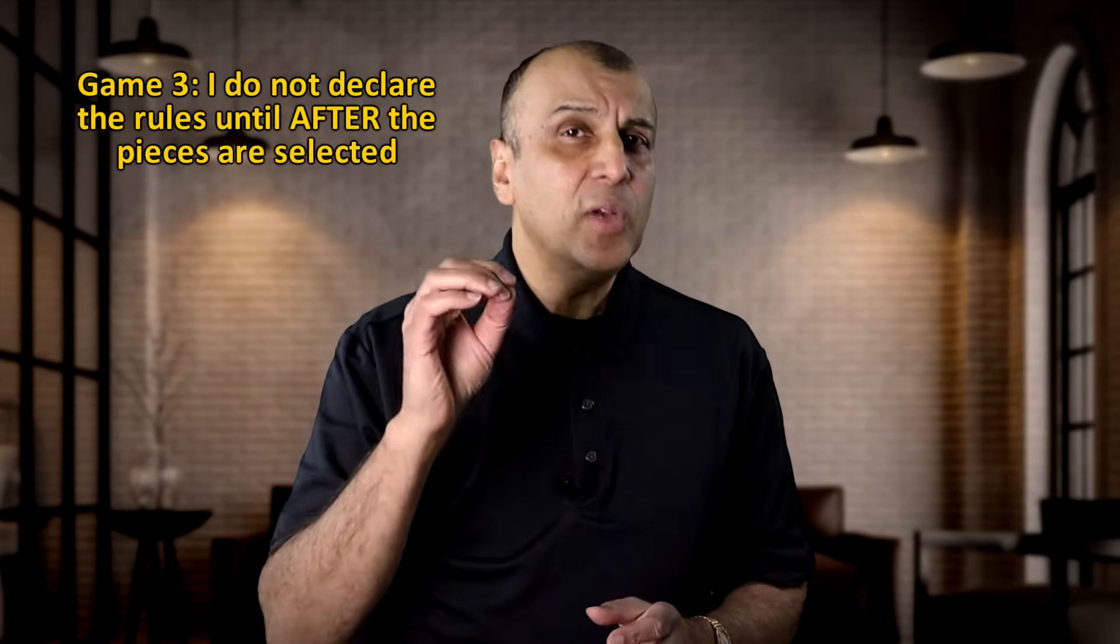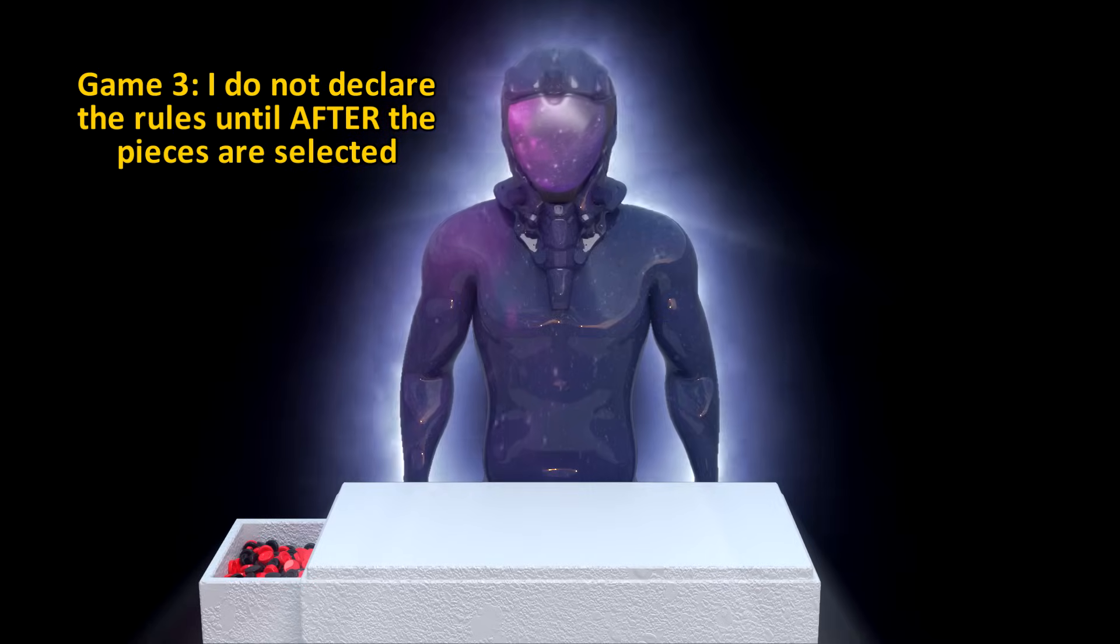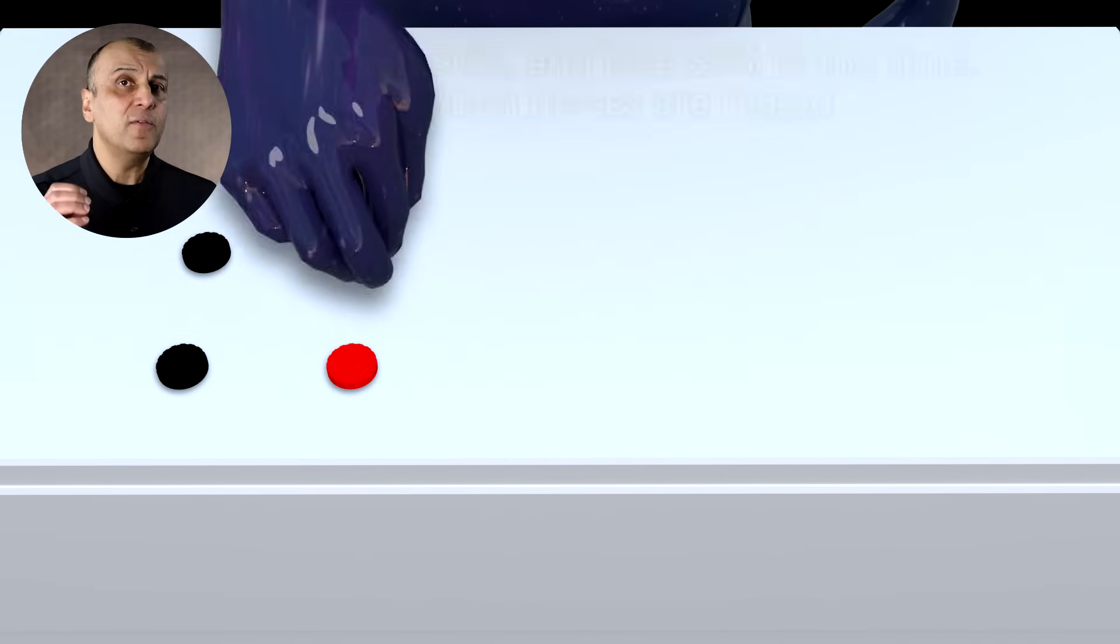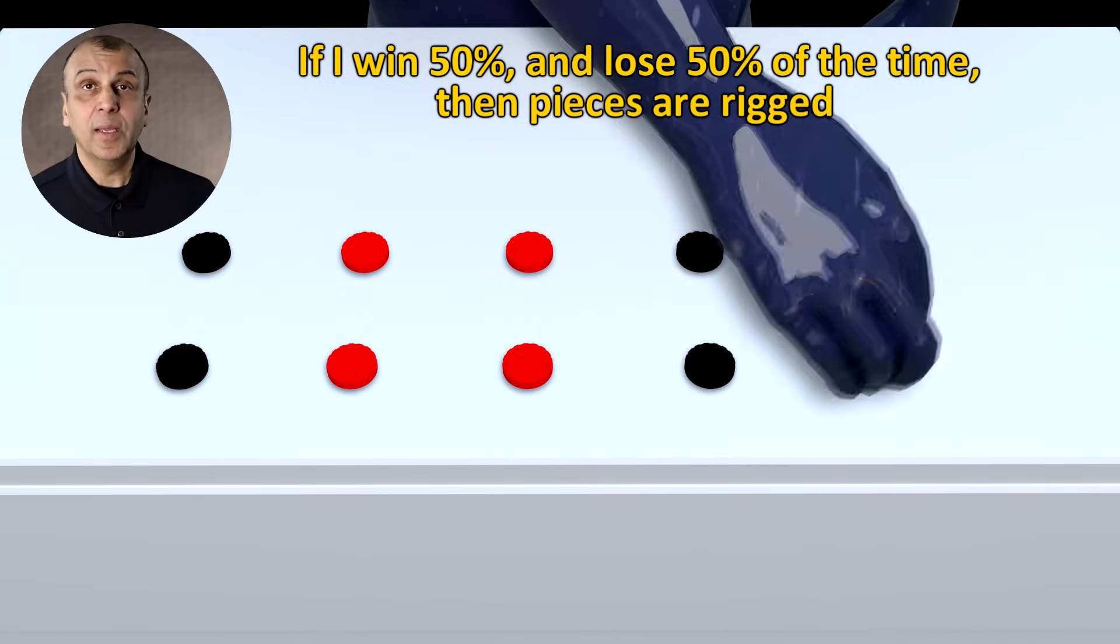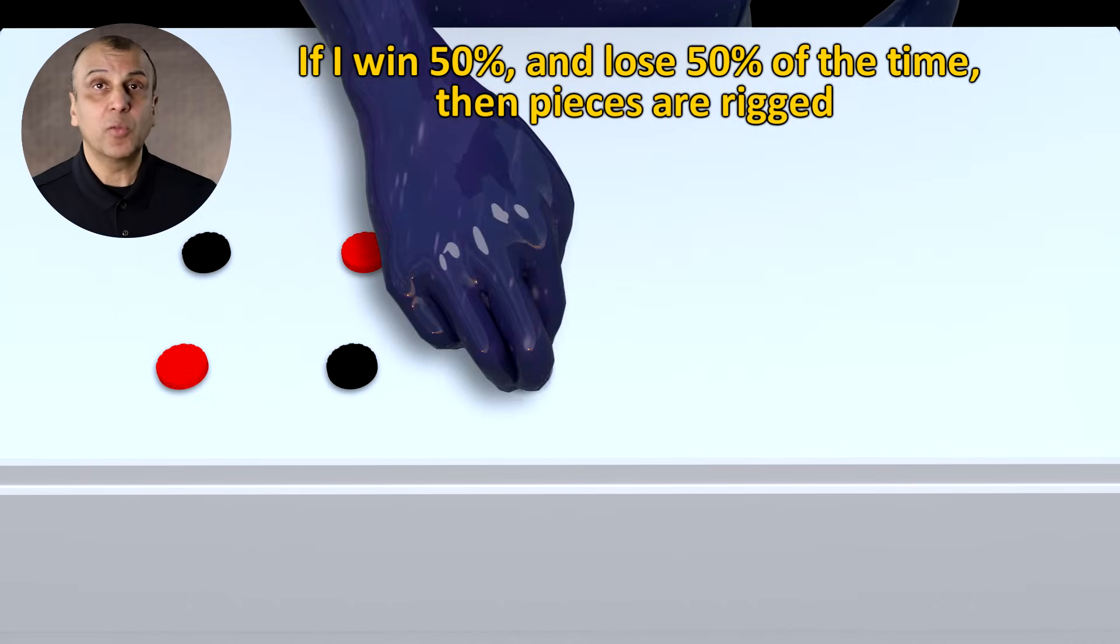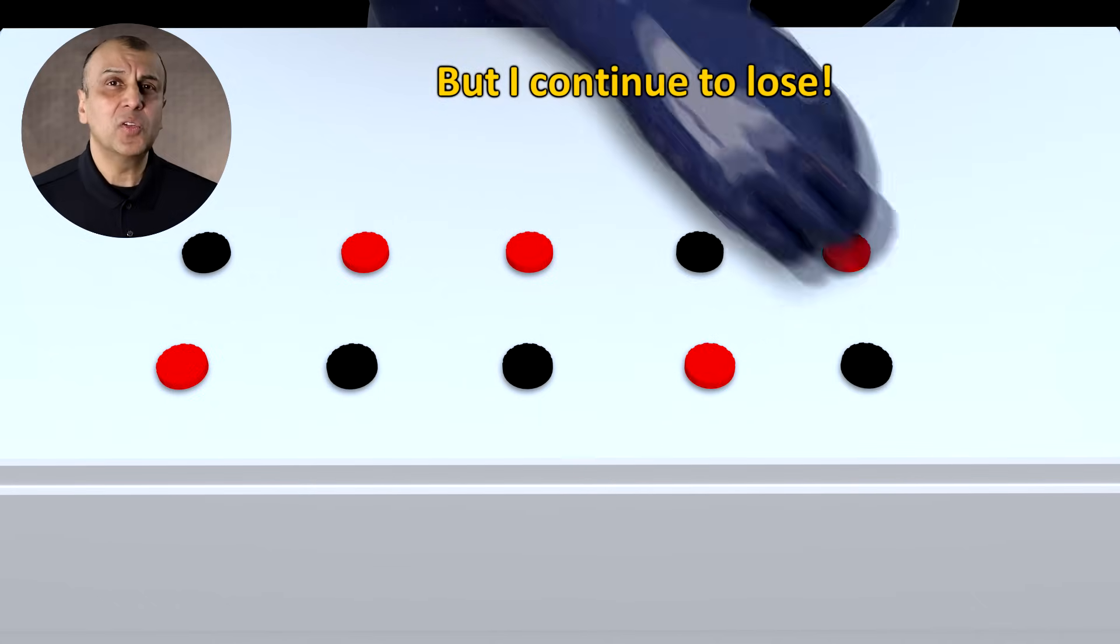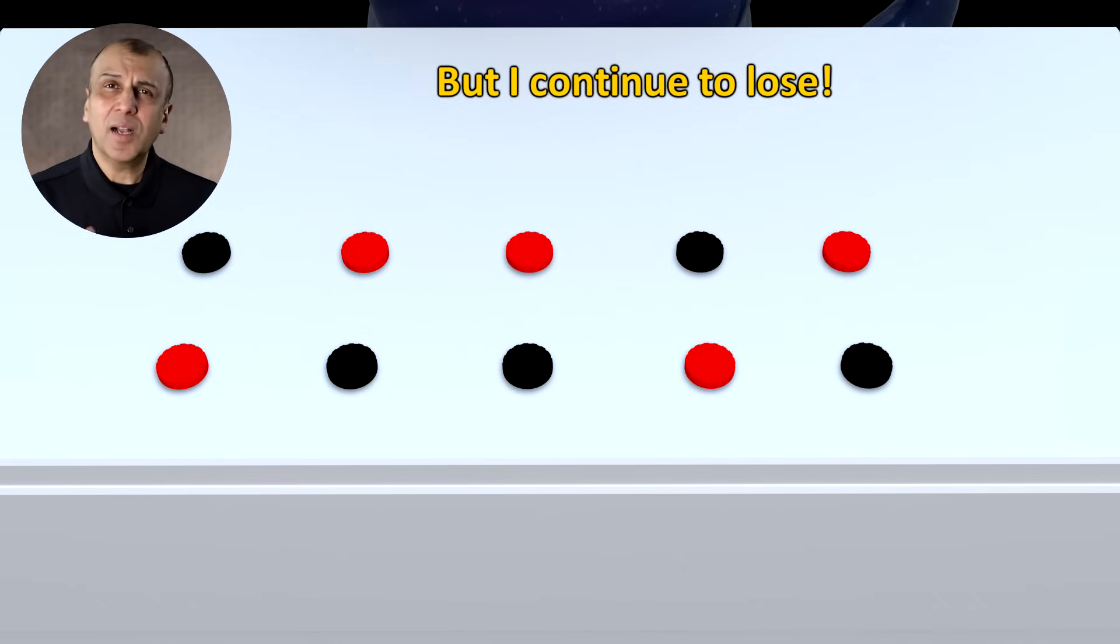So I changed the rules of the game again. This time I do not tell the universe whether matching colors or different colors will win the game until after the universe has already picked the checker pieces. If after revealing the checker pieces I find that I win 50% of the time and lose 50% of the time, then my conclusion is that indeed the checker pieces were rigged from the very beginning, because my chances of winning would be 50% if the red and black pieces were already picked by the universe. But if I continue to lose, then I have to conclude that somehow the colors of the checker pieces were not chosen ahead of time.